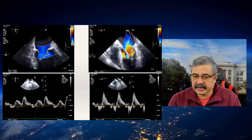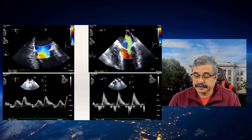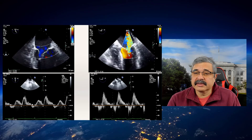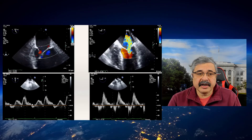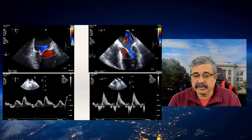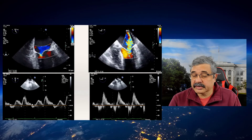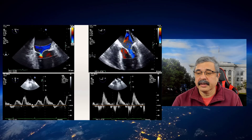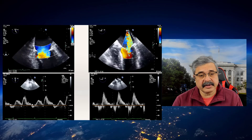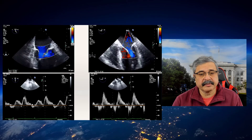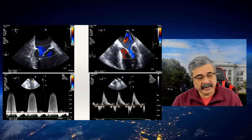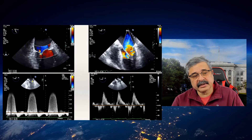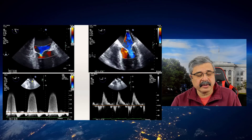You can see that besides the increase in jet area and the vena contracta, there is also systolic reversal in the left upper pulmonary vein, implying that the patient has severe mitral regurgitation. Predictably, the panel on the left, while it doesn't fully represent the MR in this specific video, demonstrates a broad jet,